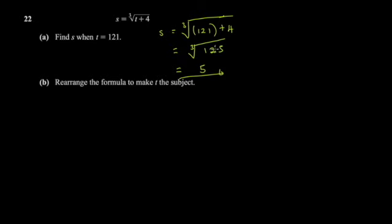Cube root of 125 equals 5, because 5 × 5 = 25 and 25 × 5 = 125. A general rule: in exam questions, answers are usually clean and simple. If you're getting something like 11/13, you've likely made a mistake — especially in simultaneous equations.